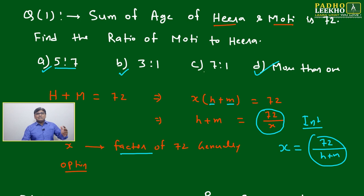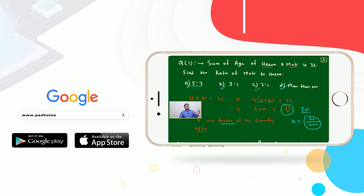Let's check 7:1. The sum is 8, and 72/8 = 9, which is also divisible and gives an integer. All three ratios work. Since no clear criteria is given about the relation between Hira and Moti's ages, we can take any of these values. The only requirement is that the sum equals 72.